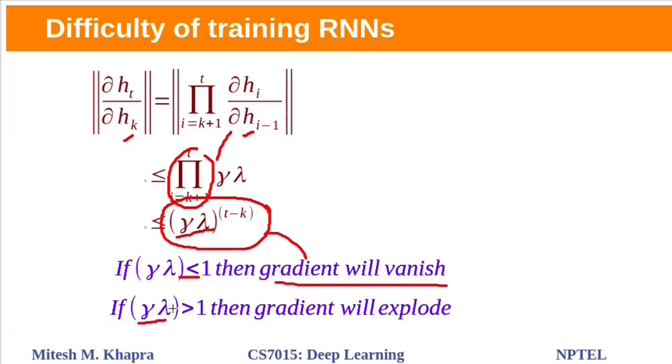If this product lambda and gamma greater than 1, then this term values grow exponentially. So gradient will explode.